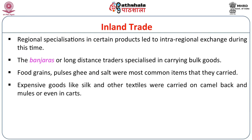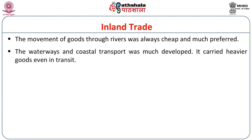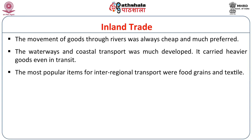Expensive goods were also catered to the market, and especially textiles and silk textiles were carried on camelback, mule, or even in carts. The movement of goods through rivers was always cheap and much preferred. Waterways and coastal transport were well developed and carried heavier goods even in transit. The most popular items for inter-regional transport were food grains and textiles.